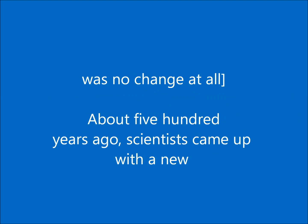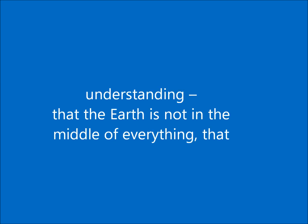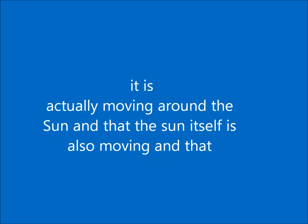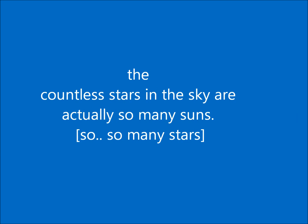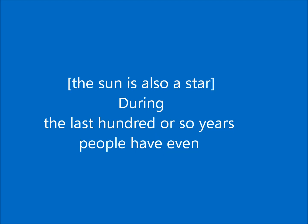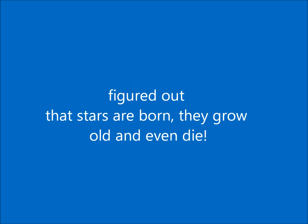About 500 years ago, scientists came up with a new understanding: that the earth is not in the middle of everything, that it is actually moving around the sun, and that the sun itself is also moving. They also found that the countless stars in the sky are actually so many suns — the sun is also a star.